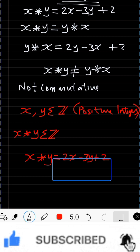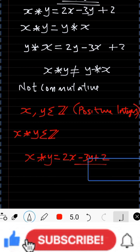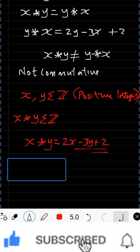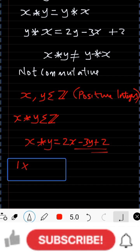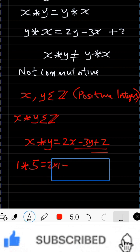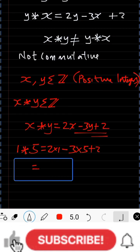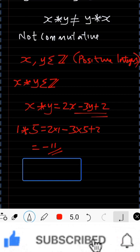Our rule of combination gives x★y = 2x − 3y + 2, so this operation may or may not be closed depending on the values. For example, evaluating 1★5: we get 2(1) − 3(5) + 2 = 2 − 15 + 2 = −11. That is not a positive integer, so the operation is not closed for all positive integers.